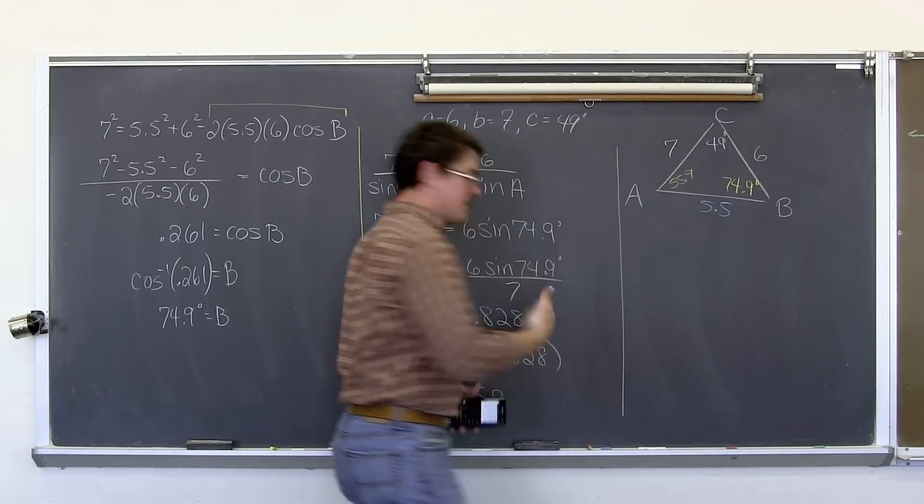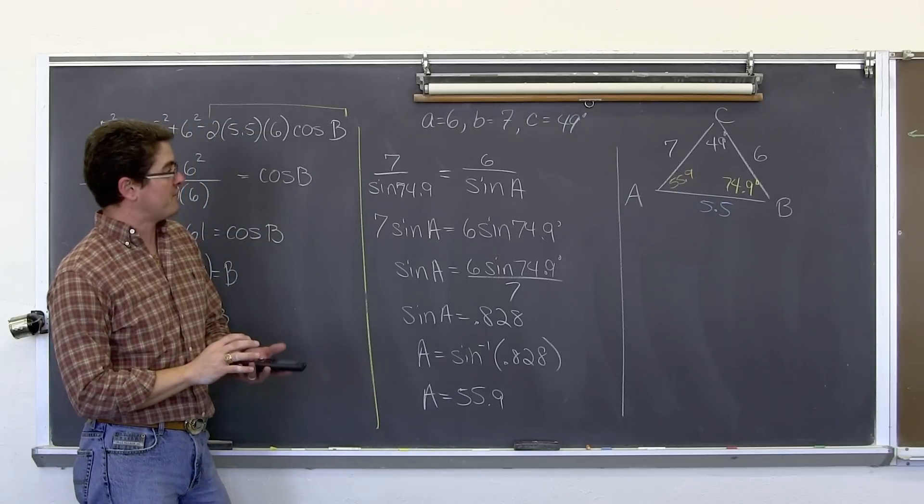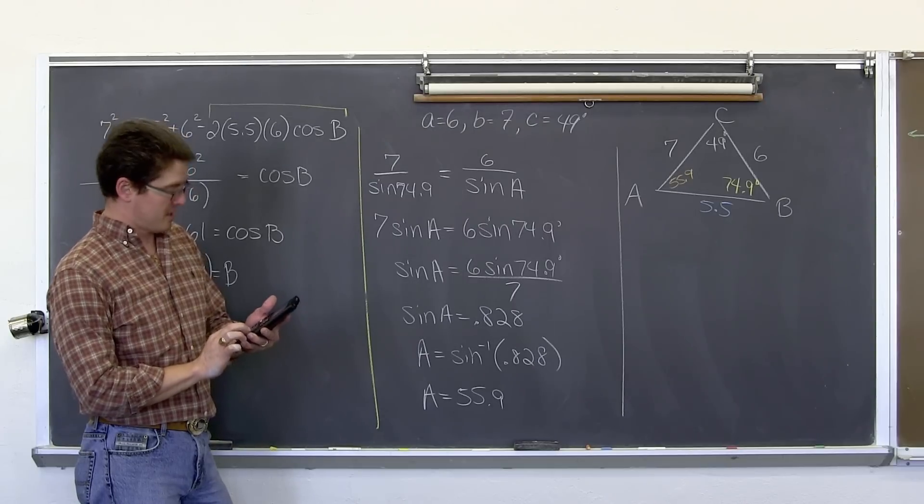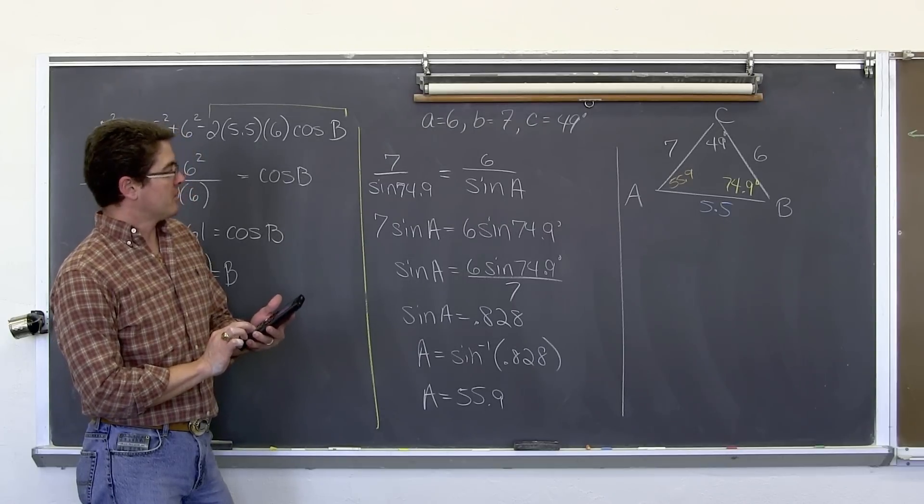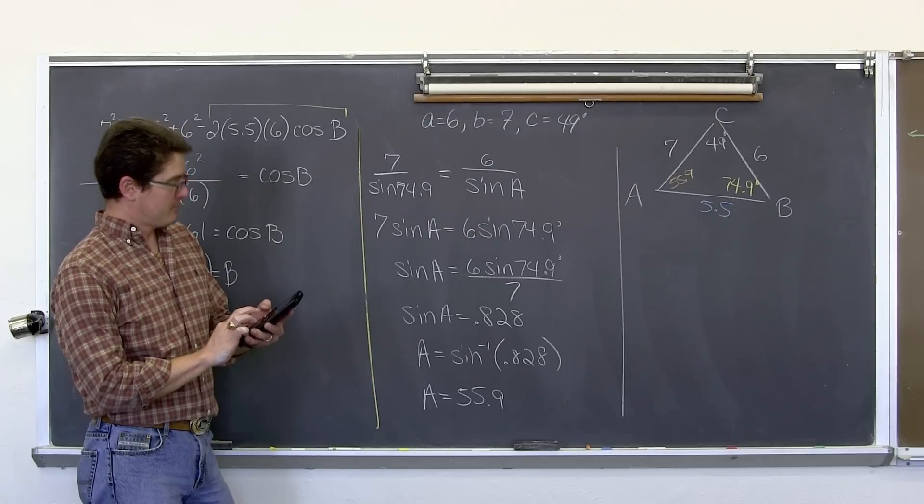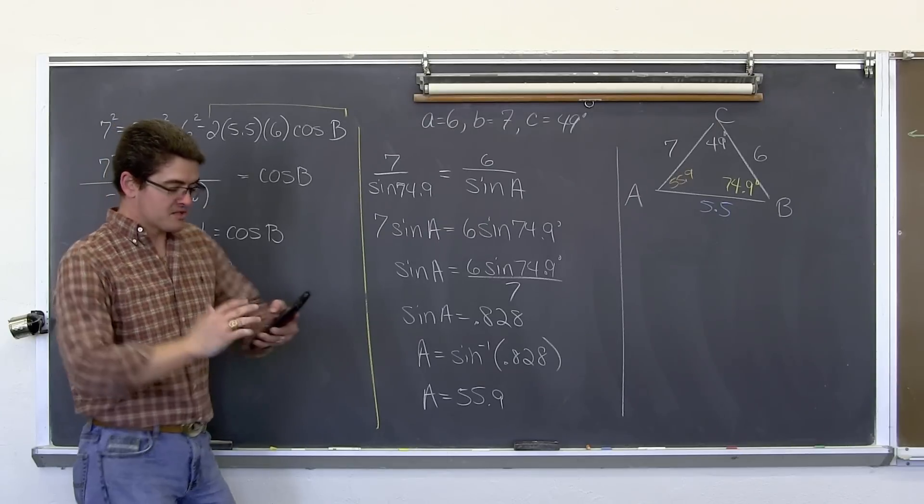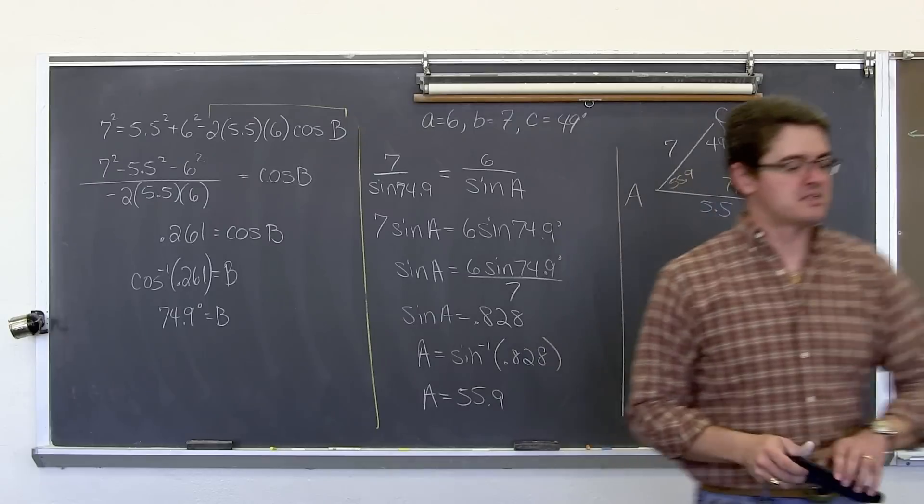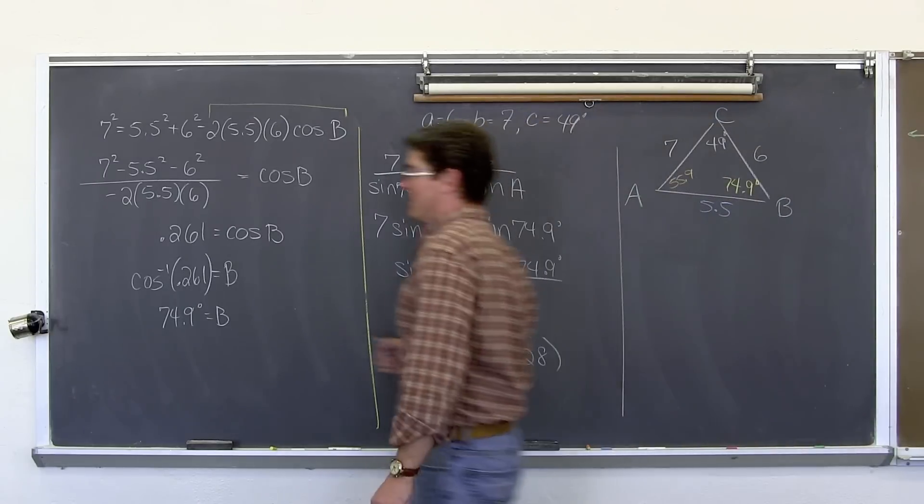And since I have gone off script here a little bit, let's just make sure these do add up to roughly 180. So 55.9 plus 49 plus 74.9 is 179.8. So that .2 to a decimal place is simply because of a little bit of round off error I did there.